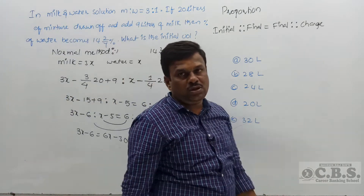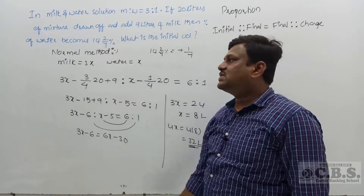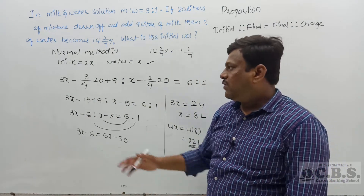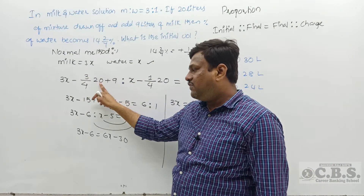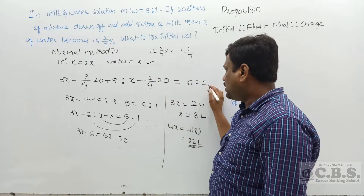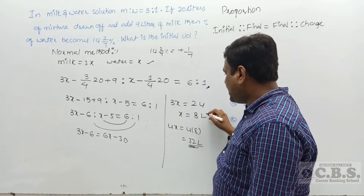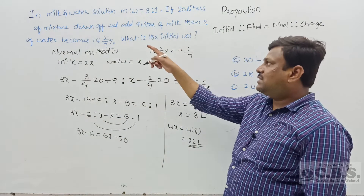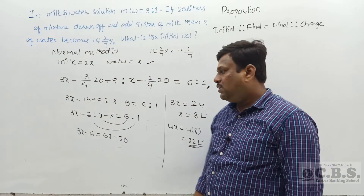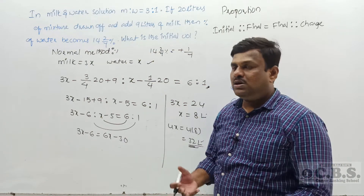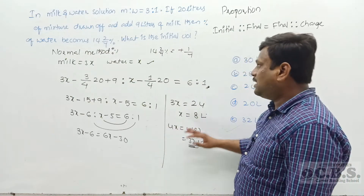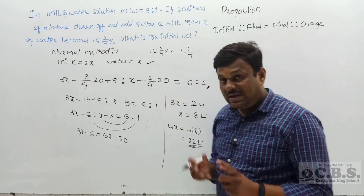In the normal method, milk is 3x and water is x. Out of 3x, 20 liters of mixture is drawn off — not only milk, not only water. Upon 4 parts, milk is 3 parts, so 3/4 of 20 = 15 liters of milk drawn off, and 1/4 of 20 = 5 liters of water drawn off, with 9 liters of milk added. Solving gives x = 8 liters, and the initial value is 4 parts = 32 liters. Now let's go back to the proportional concept.